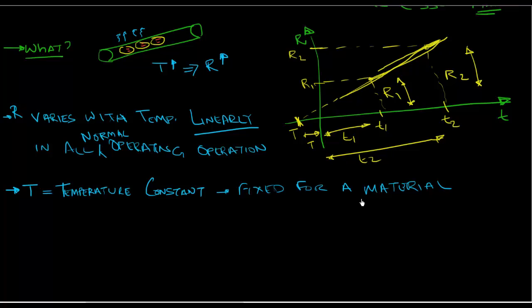So for example, the temperature constant of copper will be X. The temperature constant for aluminum would be Y. And that will remain constant irrespective of what other conditions you may have.